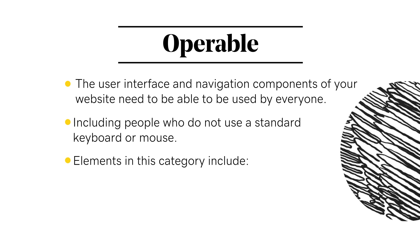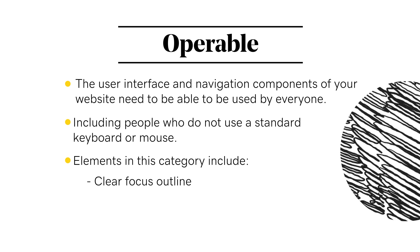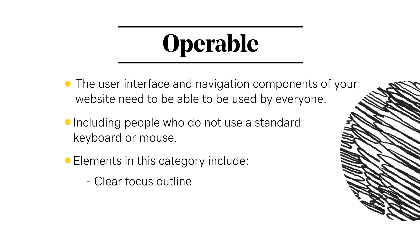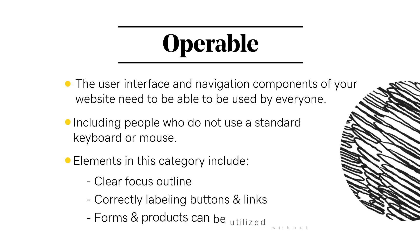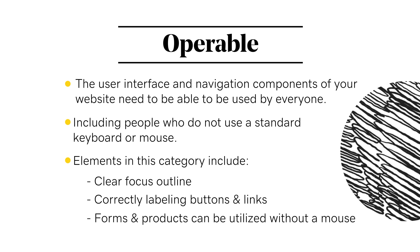Elements of operable websites include having a clear focus outline — an outline around elements that highlights the focused element as someone uses the tab key and shift+tab to move forward and backwards through the website. Correctly labeling buttons and links that have a meaning on their own without any surrounding content — that means not using 'learn more' or 'here' as link text. Ensuring that your forms can be submitted and a product can be added to the cart or purchased completely using a keyboard alone and no mouse.